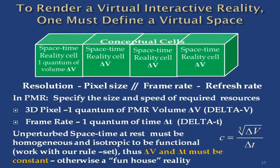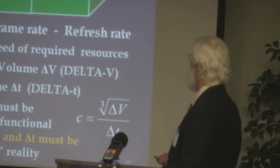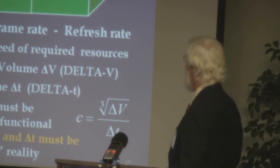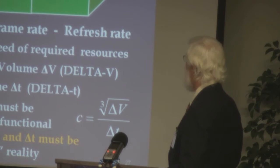Our virtual realities are specced the same way. Here are these pixels of volume, because we're in a three-dimensional game, not a two-dimensional game. A 3D pixel is one quantum of volume. The frame rate — that's that delta T. The simulation's outer loop: time goes around delta T. That's a quantum of time for this simulation.